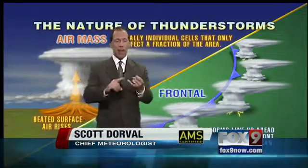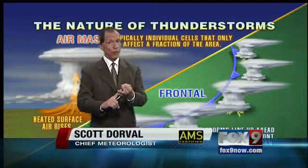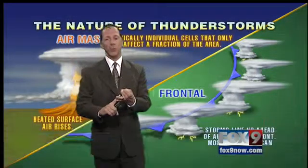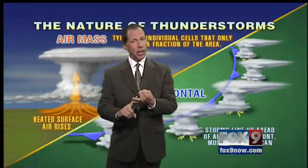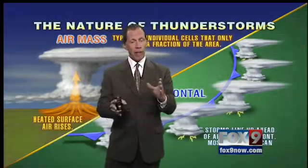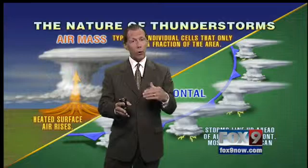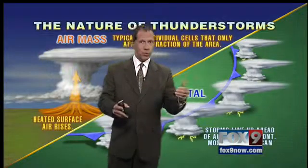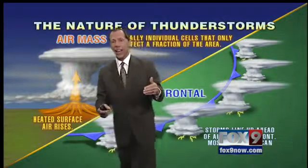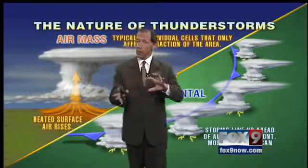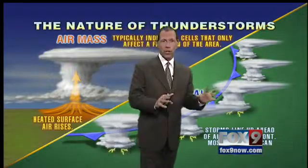So what is a severe thunderstorm? You need to have large hail, wind gusts to around 60 miles per hour. It's not necessarily a severe criteria to have lightning — of course, all thunderstorms have lightning — and that can be one of the most dangerous things.